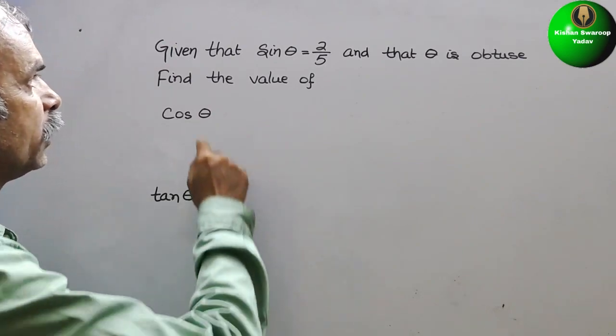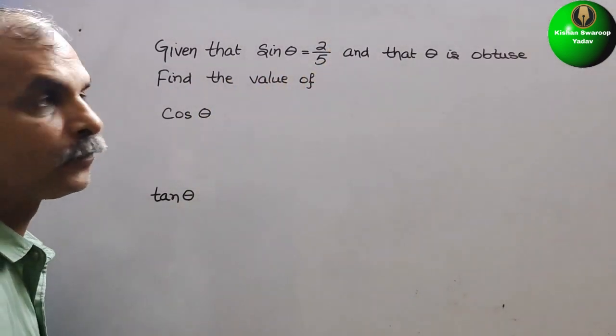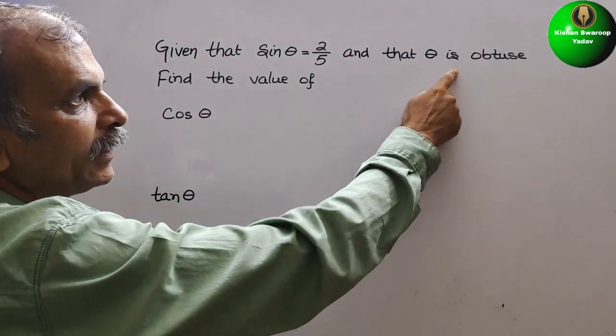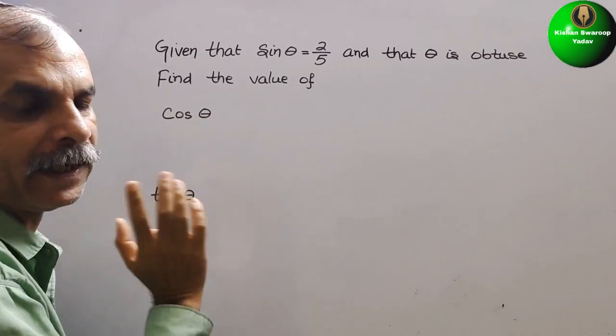Your question is, given that sin theta is equal to 2 by 5 and that theta is obtuse, find the value of cos theta and tan theta.